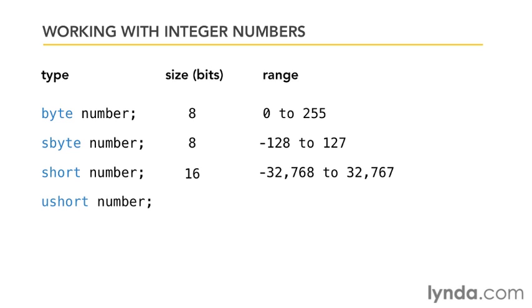So if you want to use an unsigned version of this, you have to use the ushort, which stands for unsigned short. It's also 16 bits, and it can hold a number from 0 to 65,535.